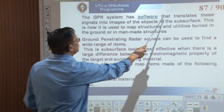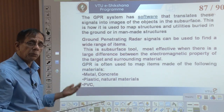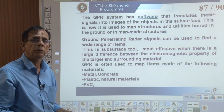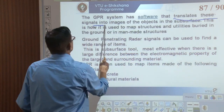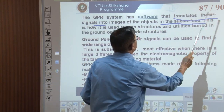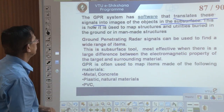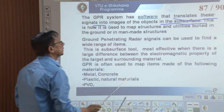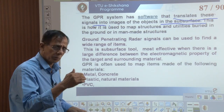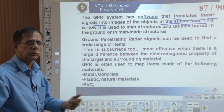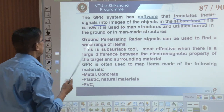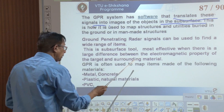GPR systems have software — as we have satellite image processing software and drone software, GPR also has software that translates these signals into images of the object. Based on those images, we can understand what the subject or material is. This is how it is used to map structures and utilities buried underground, like cables, buried tanks, plastic objects — whether man-made or natural — using GPR technique.